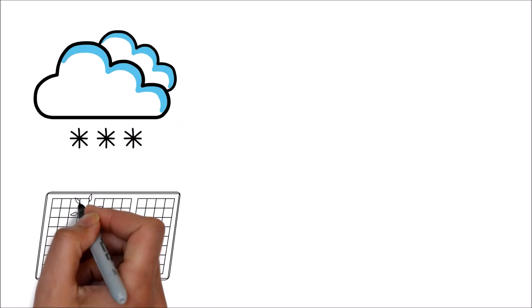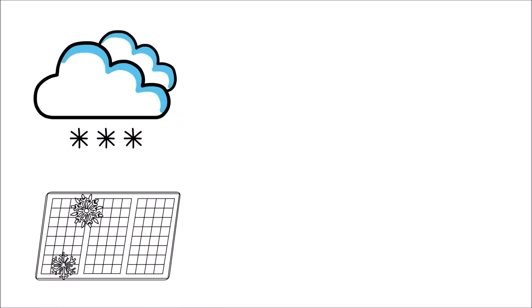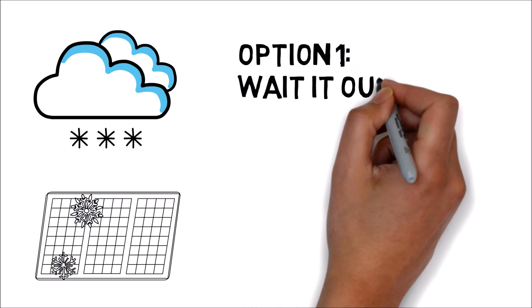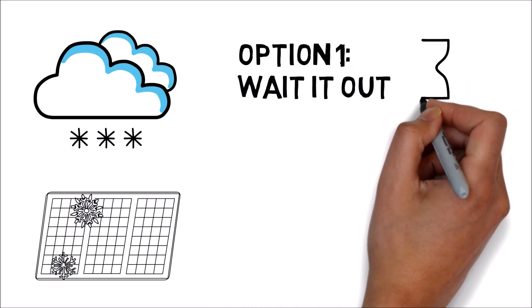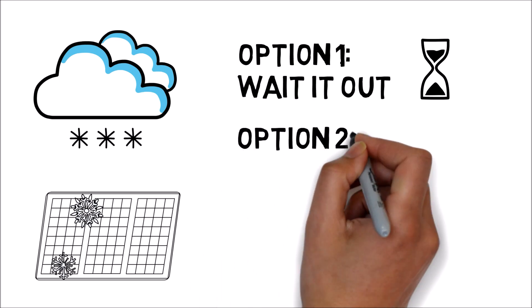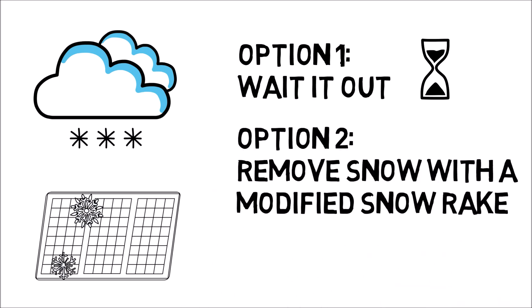Now say you have snow piled up on your solar panels and you wonder what to do. Well there's two options. One, wait it out, and if your solar panels are at an angle they'll slide off. Or remove the snow with a modified snow rake.